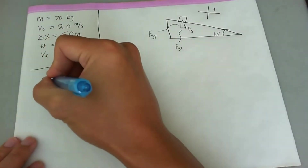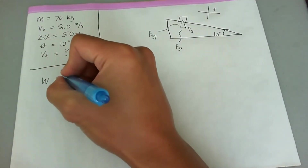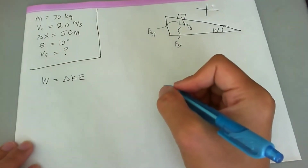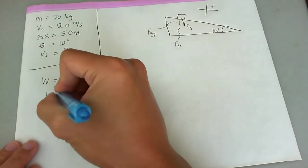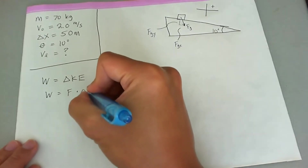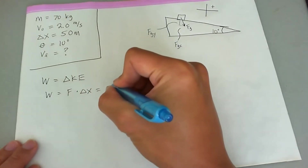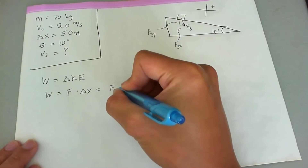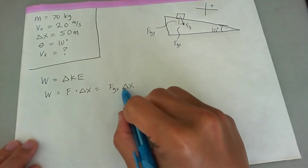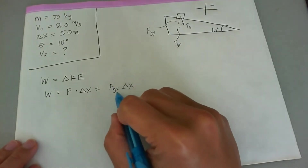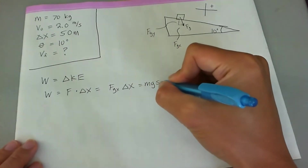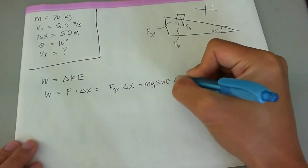The work equation we're going to use is the work-energy theorem: W is equal to delta KE. Delta W equals the force going in the direction of motion, which in this case is the force of gravity in the x-direction. Since that force is parallel to the direction of motion, the dot product simplifies, and we get mg sine theta times delta x.